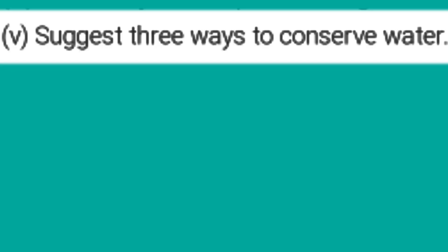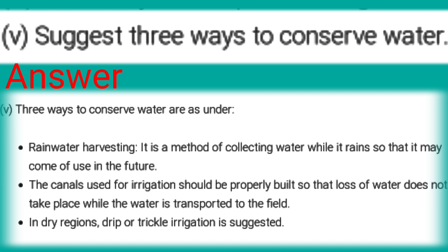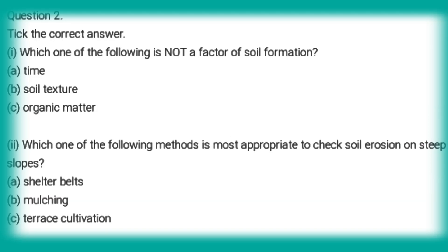Fifth: Suggest three ways to conserve water. Answer: Three ways to conserve water are: first, rainwater harvesting — it is the method of collecting water while it rains so that it may come to use in the future. Second, canals used for irrigation should be properly built so that loss of water does not take place during transport. Third, in dry regions, drip or trickle irrigation is suggested.